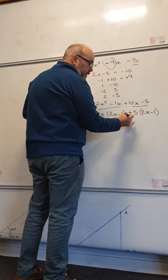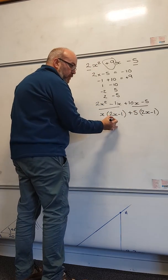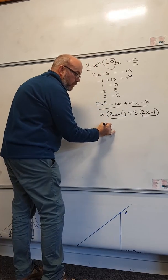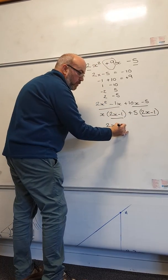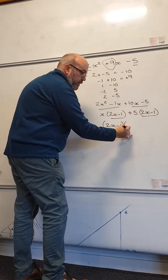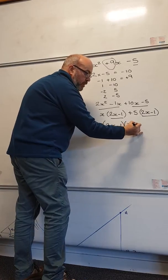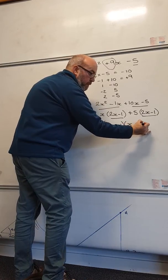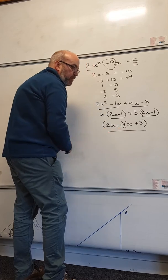These are added, so therefore my bracket is going to be (2x - 1) multiplied by (x + 5). That's fully factorised.